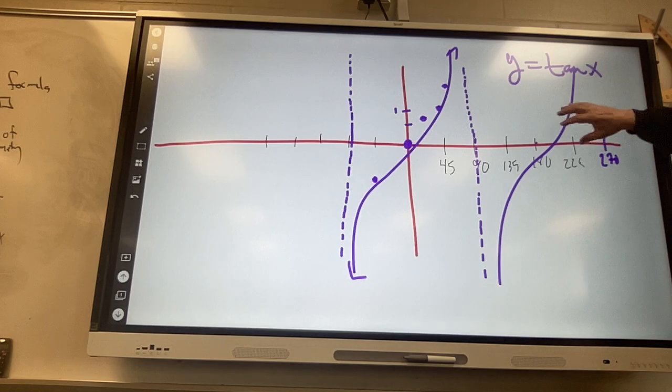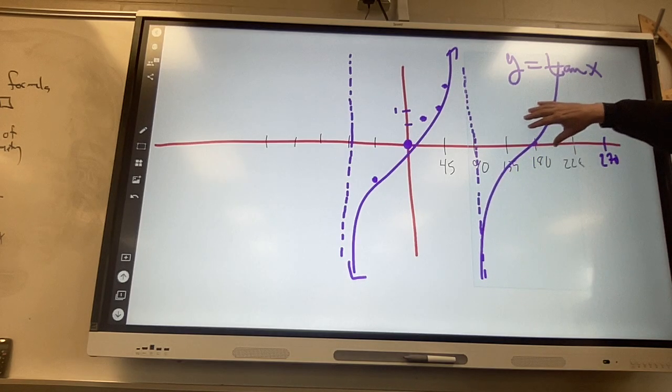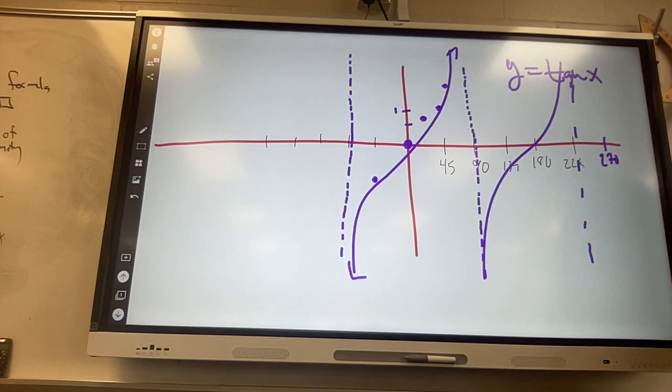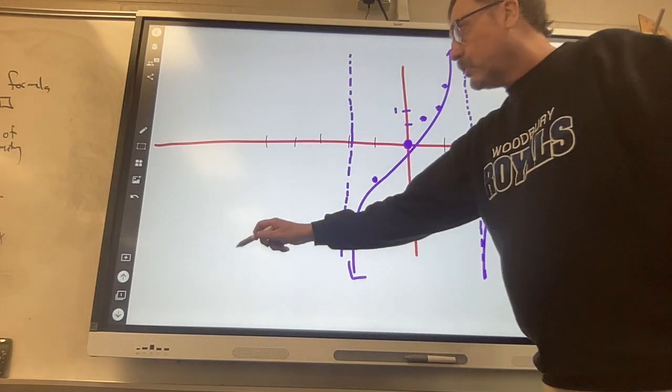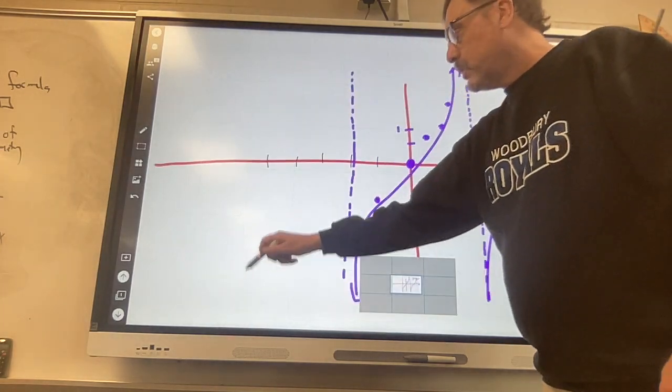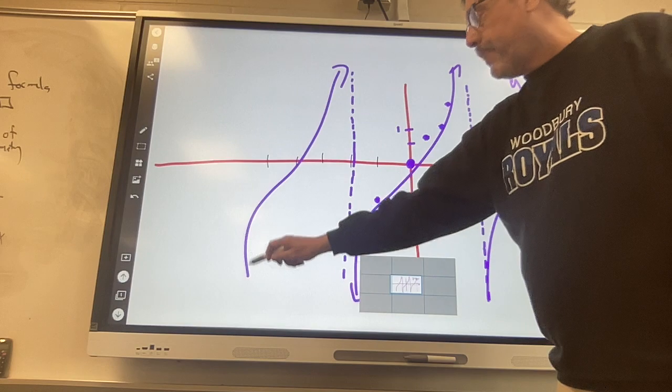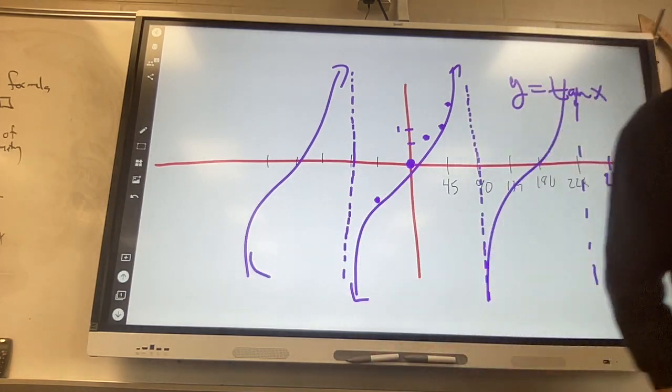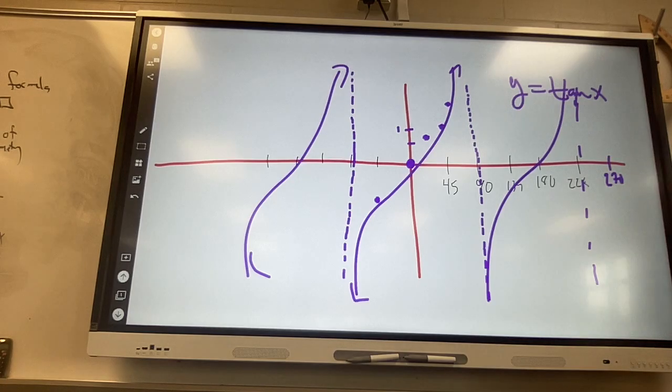That just sucked. All right. And that is what the tan graph looks like. That's got a pretty fanciness to it. All of those dotted lines are spots where it is undefined. There is no value. The values of the trig function look like that.